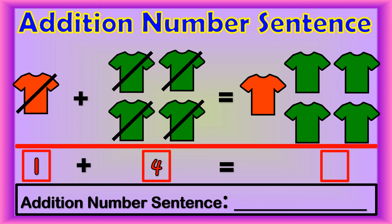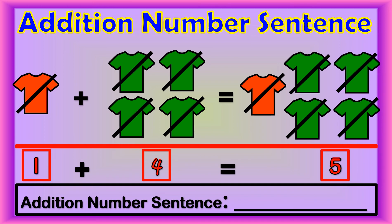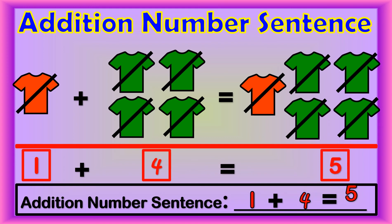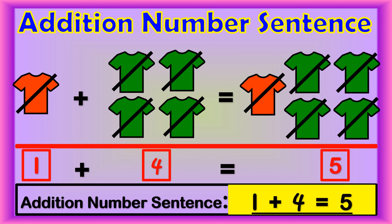Then count the orange and green shirts together. 1, 2, 3, 4, 5! There are 5 shirts in all. Now we write 1 plus 4 equals 5. So, the addition number sentence is 1 plus 4 equals 5.